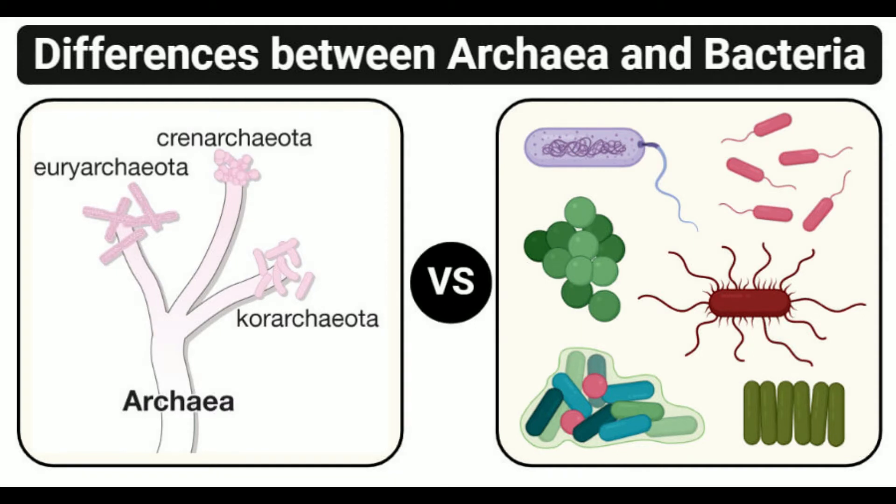Types: Archaea are divided into different groups like methanogens, thermophiles, and halophiles on the basis of their characteristics. Bacteria are divided as gram-negative and gram-positive based on their response to gram-staining.